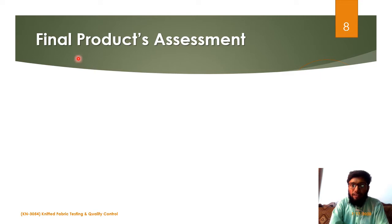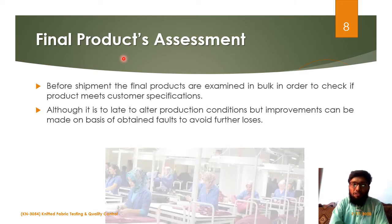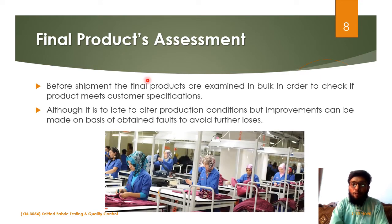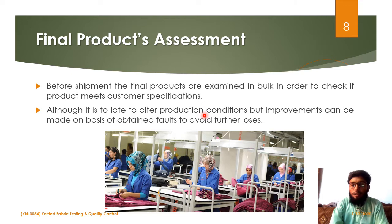Final product assessment: before shipment, the products are examined in bulk in order to check their specifications and quality. Although it is too late to alter the production conditions at this stage, some improvements can be made for future production to avoid the losses and faults obtained in the current production.